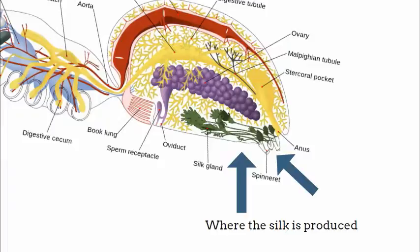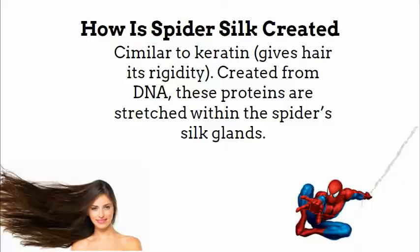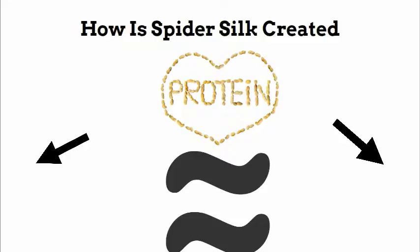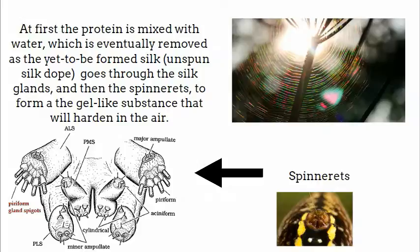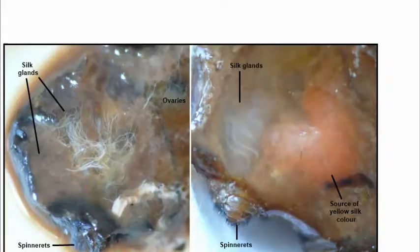The process of creating silk begins with proteins, which are very similar to the keratin that gives hair its rigidity. They are created from DNA, and these proteins are stretched within the spider's silk glands. At first the protein is mixed with water, which is eventually removed as the unspun silk dope goes through the silk glands and then the spinnerets to form a gel-like substance that hardens in the air.